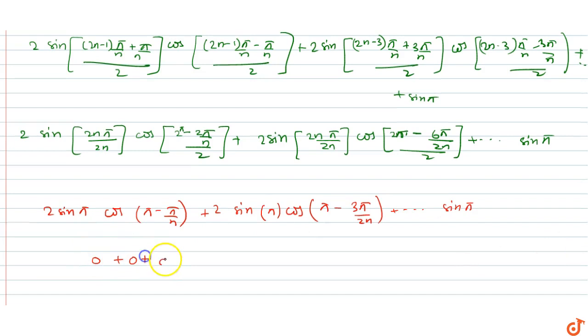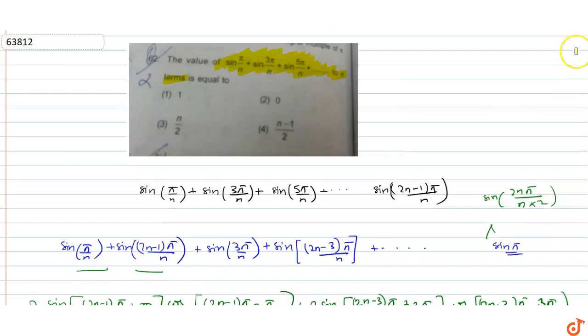So 0 + 0 + 0 = 0. The answer is 0. Checking the options, option 2 is the correct answer.